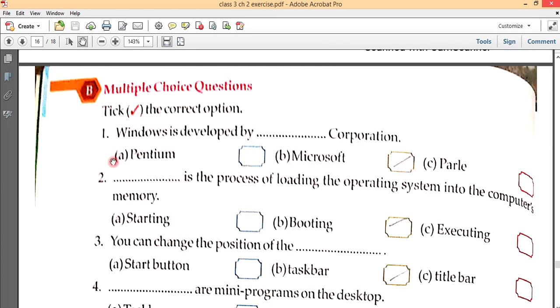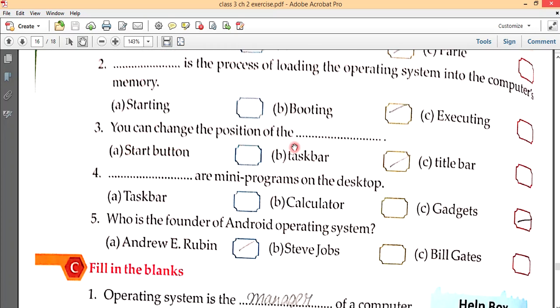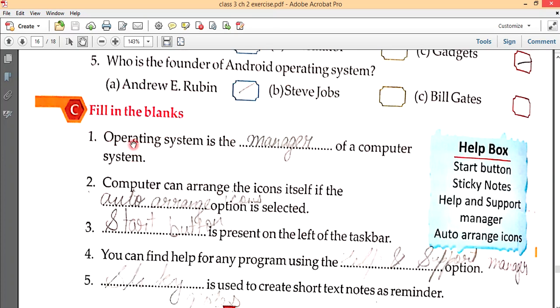Fill in the MCQ. Windows is developed by Microsoft Corporation. Number two - dash is a process of loading the operating system into the computer's memory, so that is booting. You can change the position of the taskbar. Dash are the mini programs on the desktop, that is gadgets. And fifth, who is the founder of Android operating system? That is Andrew E. Rubin.